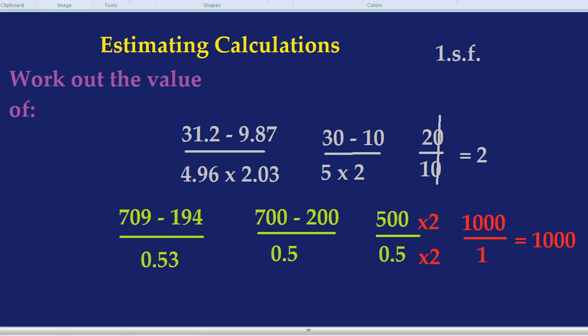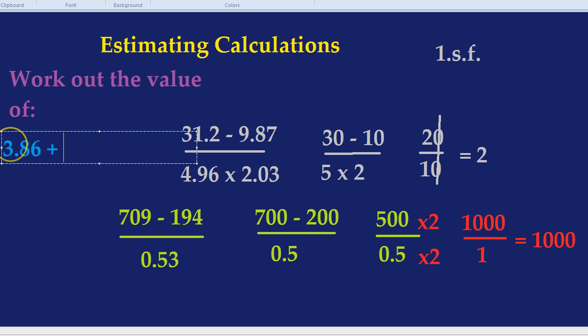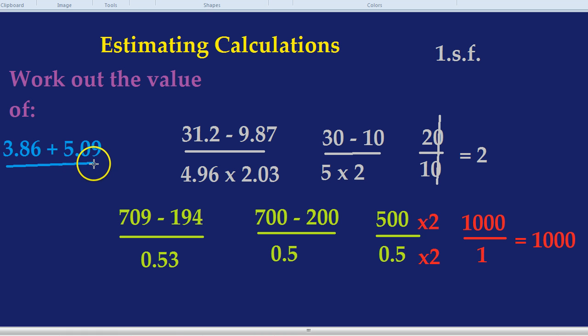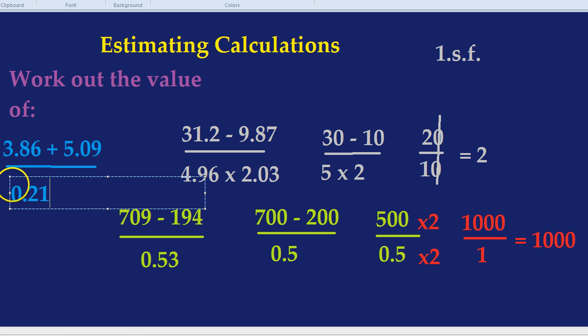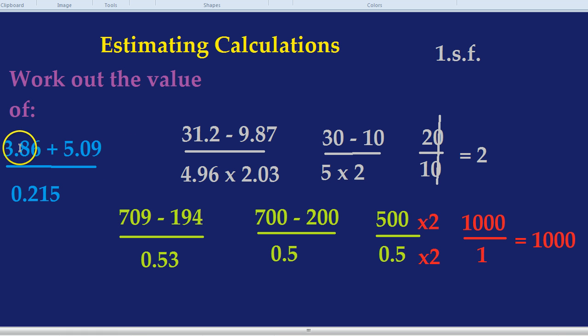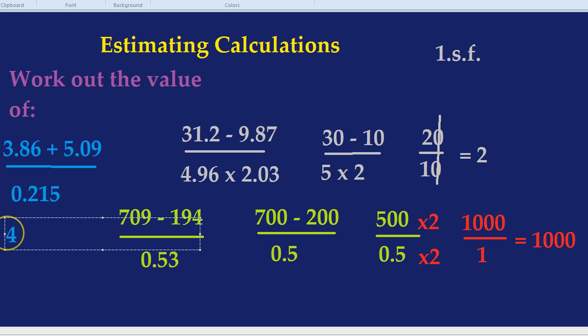OK one last example. I think we're beginning to get the hang of it. How about 3.86 plus 5.09 divided by something like 0.215. Let's see what we do. Well what is the 3.86 round to to 1 significant figure? It rounds to 4. And the 5.09 rounds to 5.